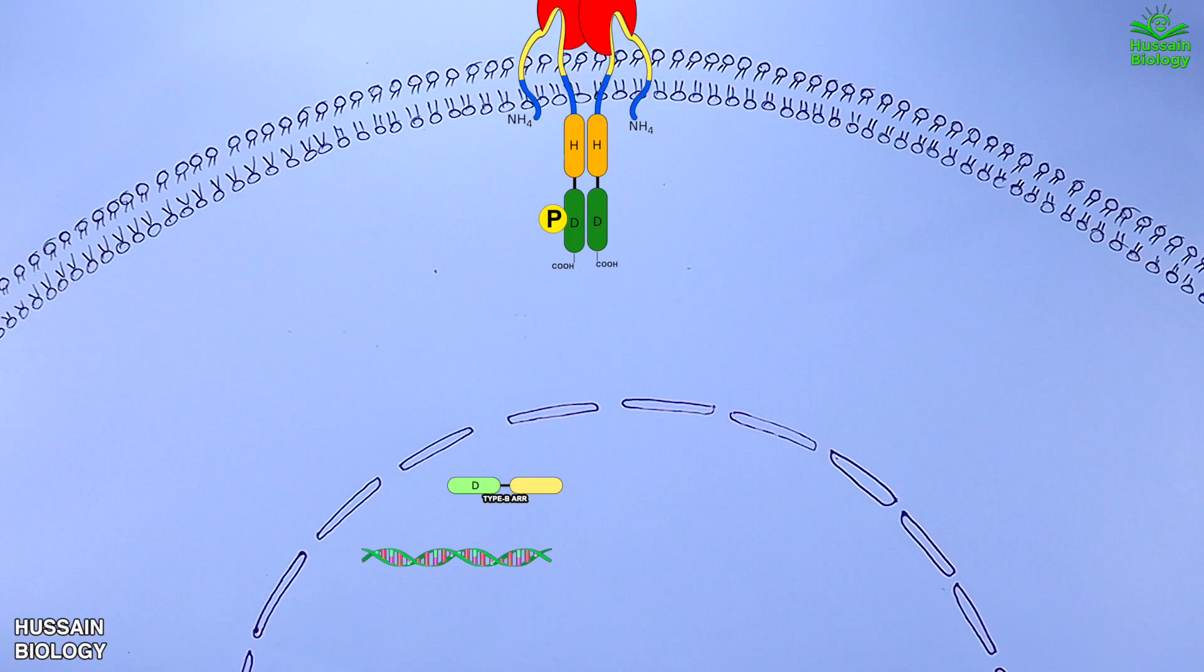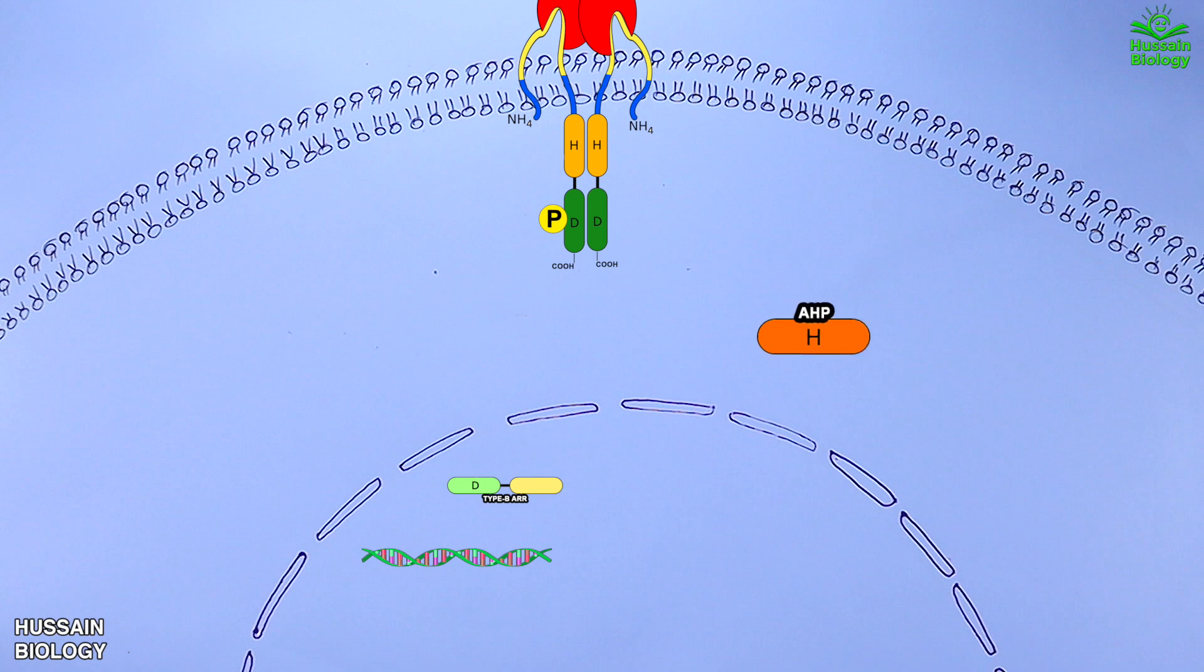Now we have got the fully activated cytokinin receptor. Moving forward, we also have the inactive AHP protein within the cytoplasm, and this AHP protein is acted upon by phosphorylated active receiver domain of cytokinin receptor. We can see the phosphate from the receiver domain of the receptor is transferred to the AHP protein.